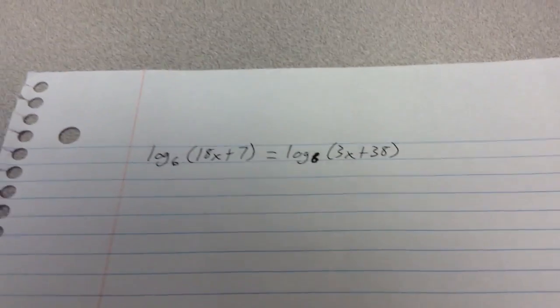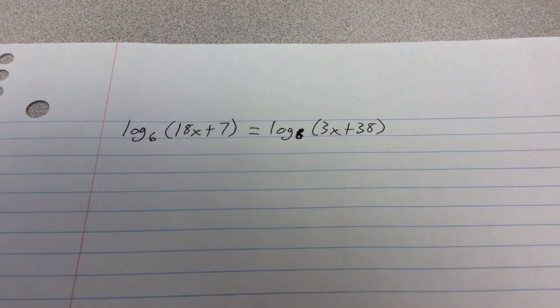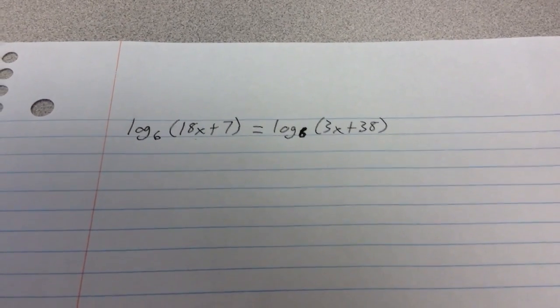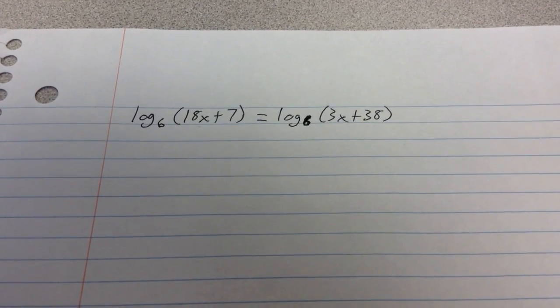All right, so let's look at a logarithmic equation that has the same base on both sides. The reason that you know this is a logarithmic equation is because there are logarithms on both sides and the variable is inside the logarithm.